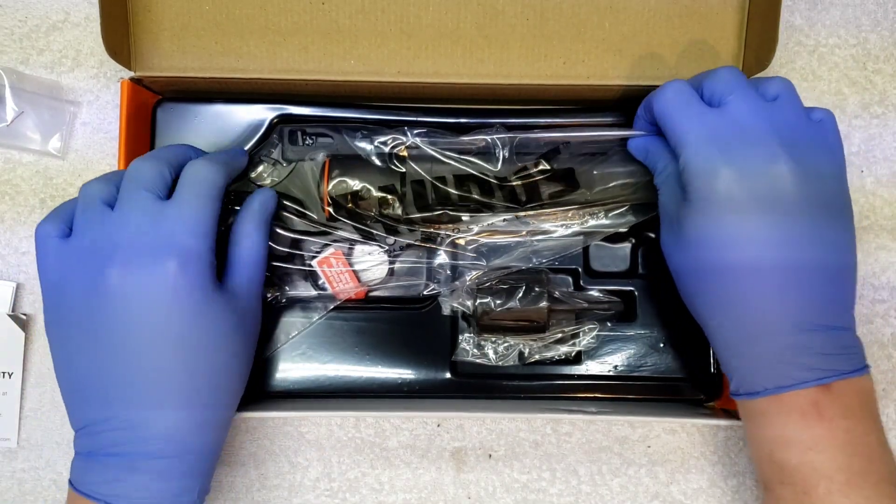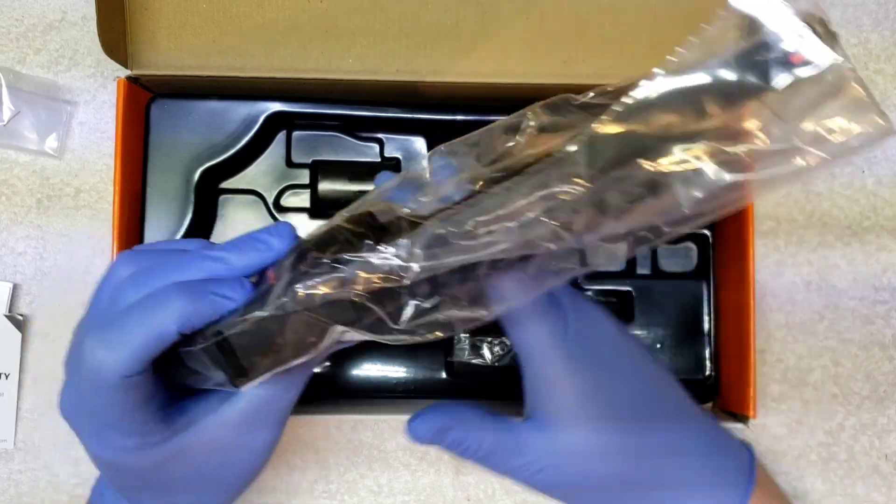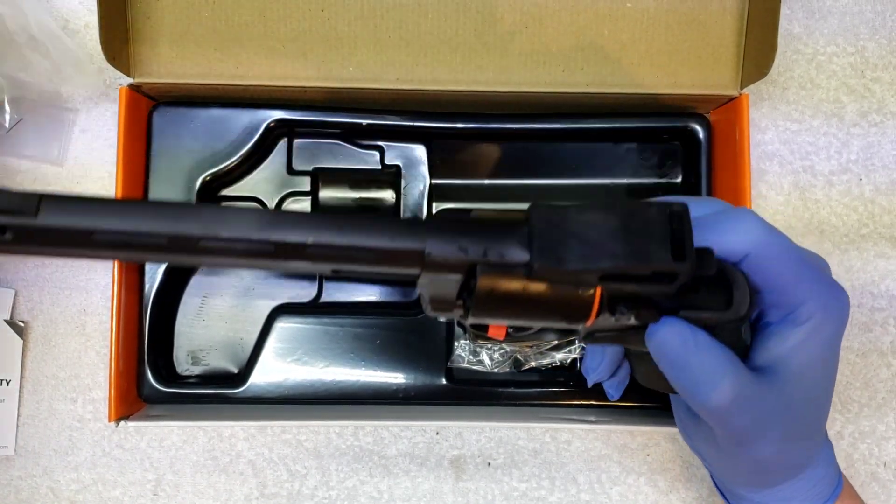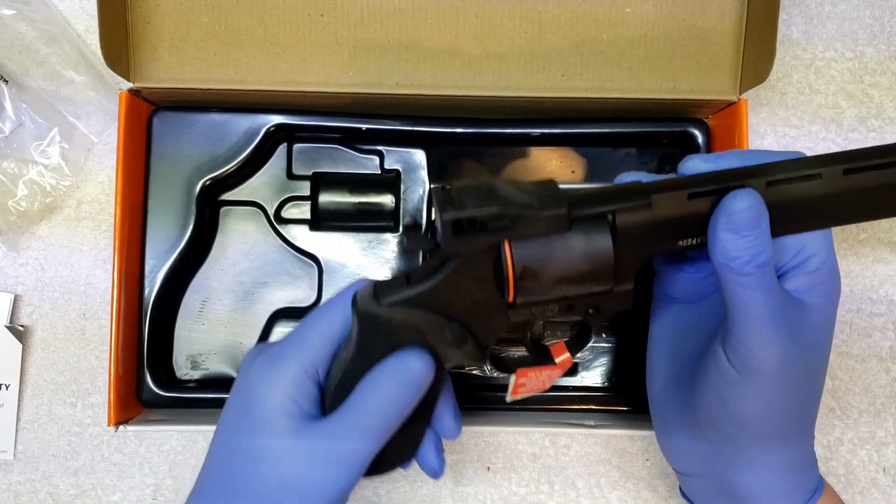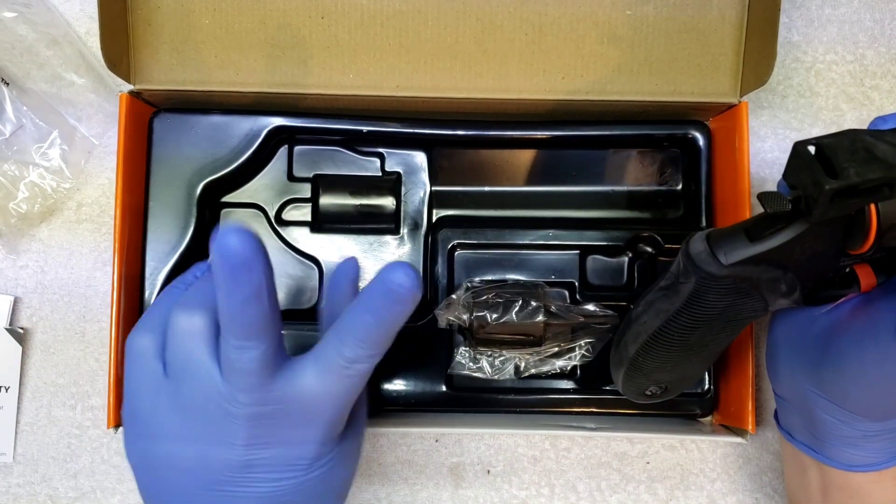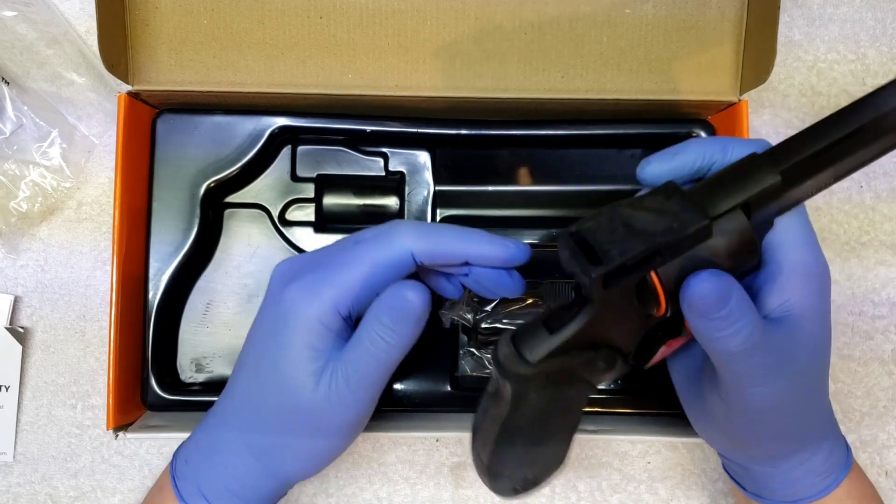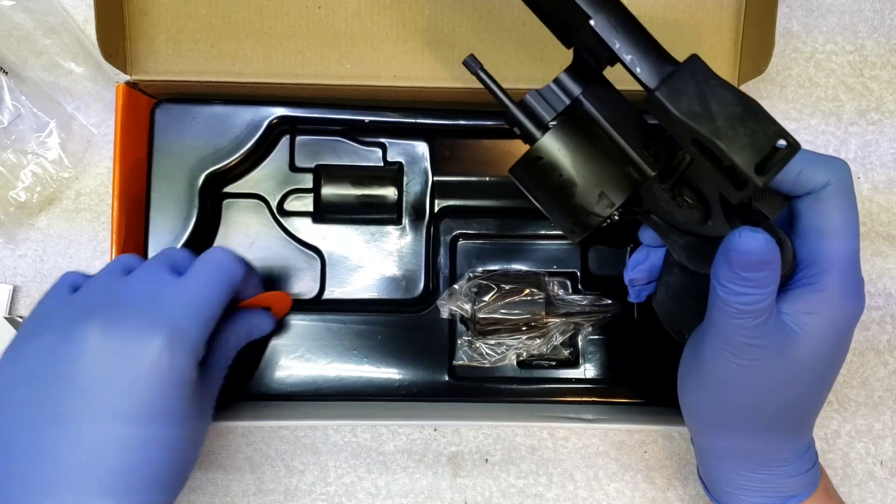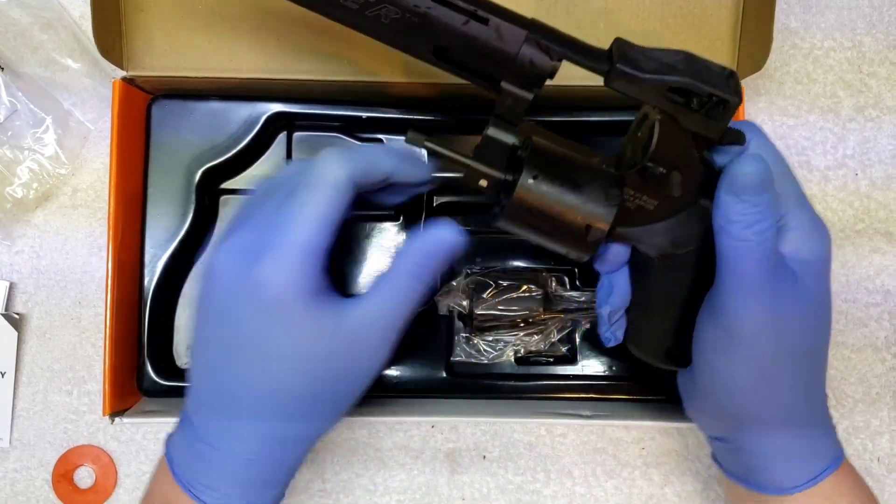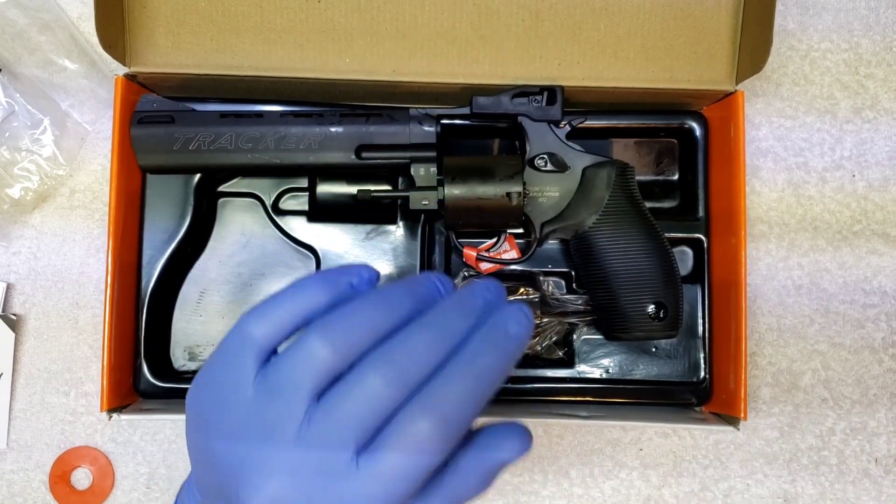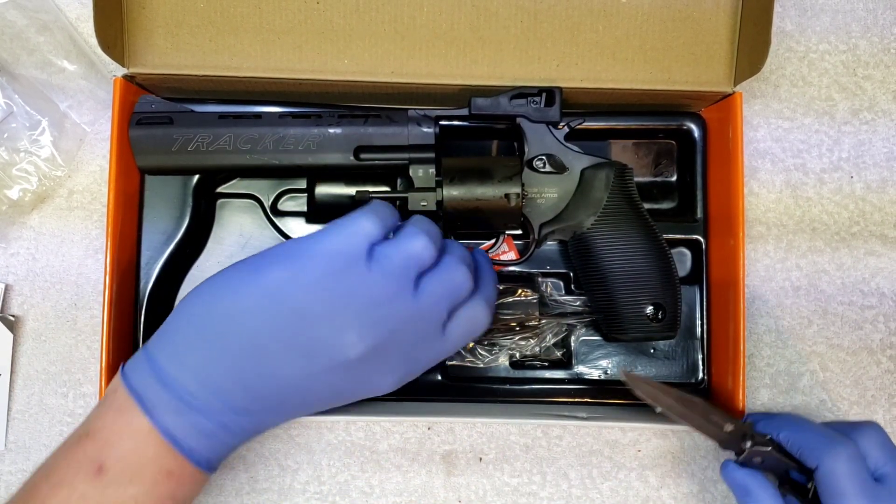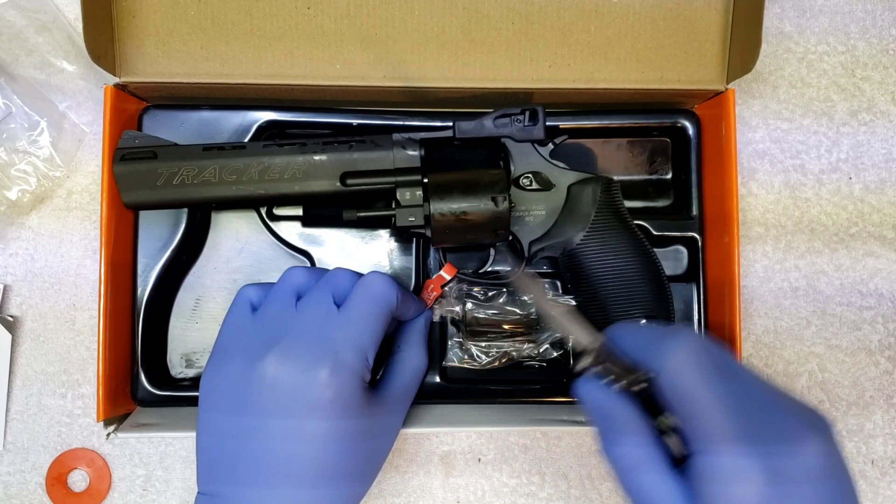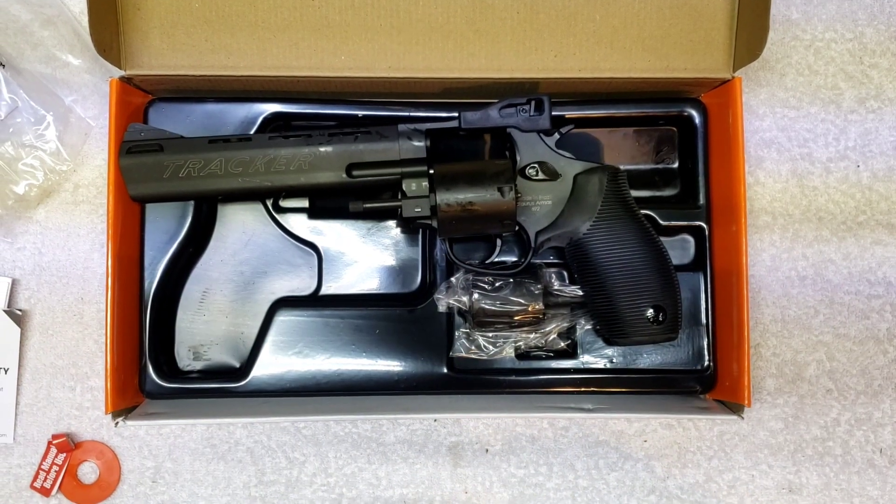It looks surprisingly like the Judge with that grip on it. So the Tracker... this is the 357 cylinder, I'm gonna kick that out, get that off of there. Let me get my knife out, cut this off. Now let's take a look at this puppy.